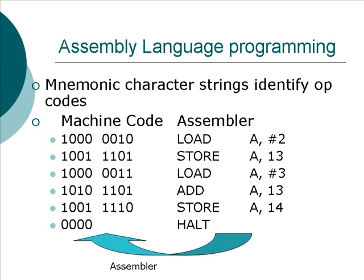The sequence of ones and zeros — the program in ones and zeros — is called a machine language program. One step up from this, we could write a program in assembler. Assembler is very much like machine code, except that instead of writing in ones and zeros, we write in mnemonic codes. There's almost a one-to-one mapping between machine code and assembler. For this simple example, we'll say that for every machine code instruction, there's an assembler instruction and vice versa.